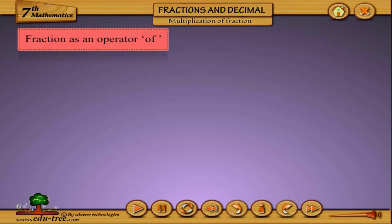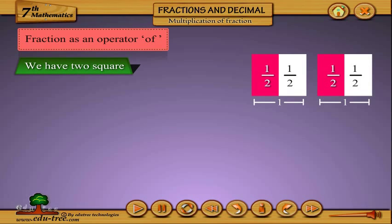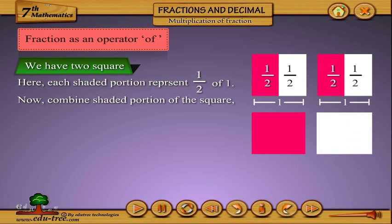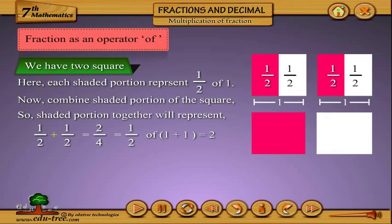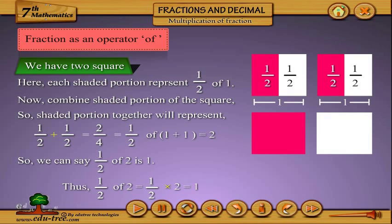Fraction as an operator. We have 2 squares, where each shaded portion represents 1/2 of 1. Now, combining the shaded portions of the squares, the shaded portions together represent 1/2 plus 1/2 equals 1/2 of (1 plus 1) equals 1/2 of 2. So we can say 1/2 of 2 is 1. Thus, 1/2 of 2 equals 1/2 into 2, which equals 1.